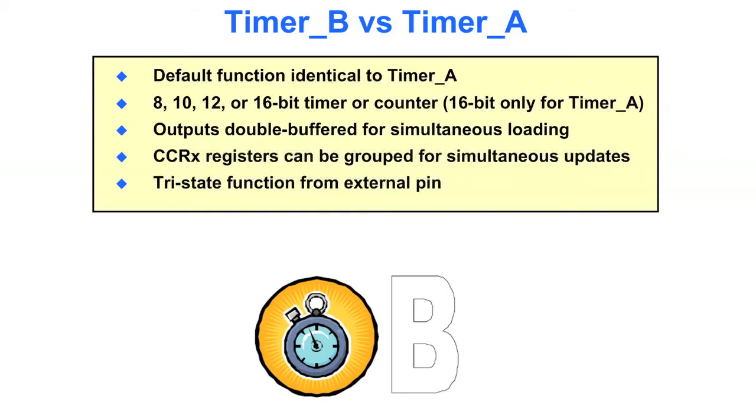But timer B has 8, 10, 12, or 16-bit timer counters. Timer A is only a 16-bit timer.